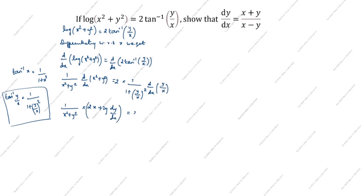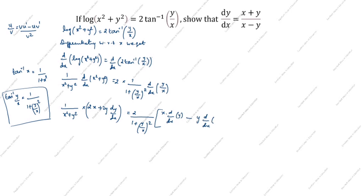On the right side, we differentiate y/x using the quotient rule. The formula is (v·u' − u·v') / v². Here u = y, v = x, so: x·d/dx(y) − y·d/dx(x), all divided by x². This gives (x·dy/dx − y·1) / x².